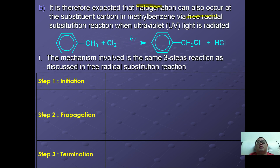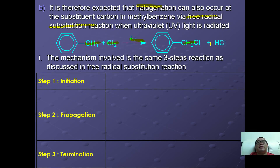In the general equation for free radical halogenation, toluene reacts with chlorine under UV light to form chloromethylbenzene (benzyl chloride) plus HCl as a side product.